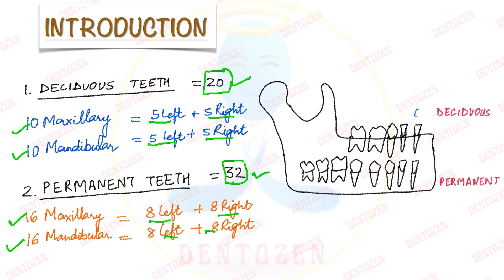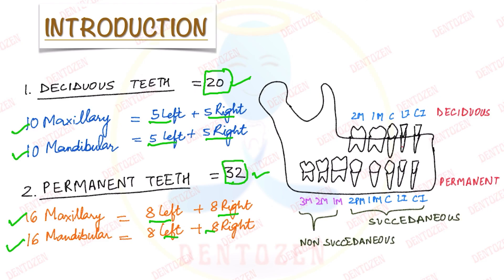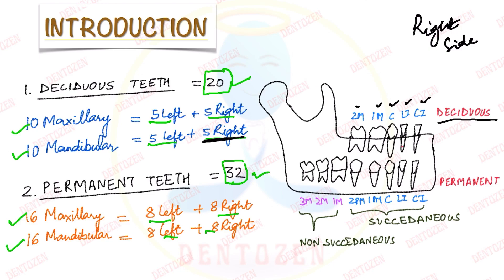If we look at the right side view of the mandible, we can see how these teeth are arranged. First, deciduous teeth will form: deciduous central incisor, lateral incisor, canine, first molar, and second molar. Later they will be replaced by their permanent counterparts — deciduous central incisor by permanent central incisor, lateral incisor by permanent lateral incisor, canine by permanent canine, first molar by first premolar, and second molar by second premolar.